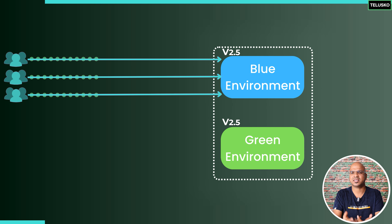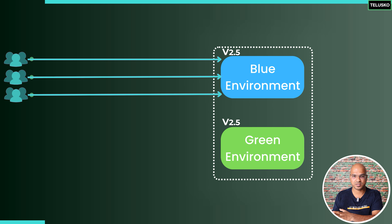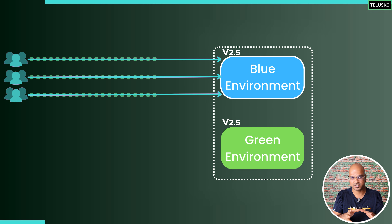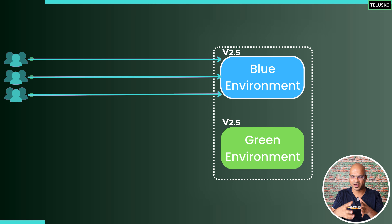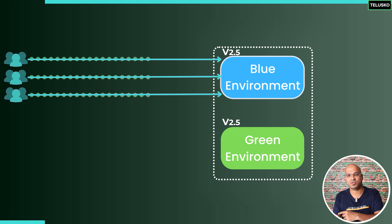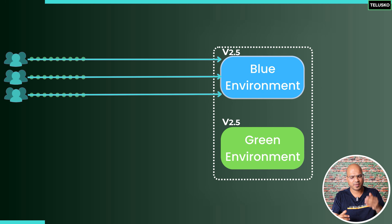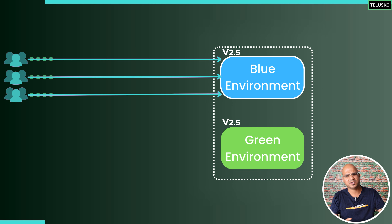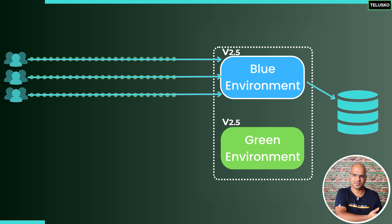Let's say the blue instance is live. All users are using the blue instance, which is responsible for accepting user requests, responding to them, and connecting to other servers or a database.